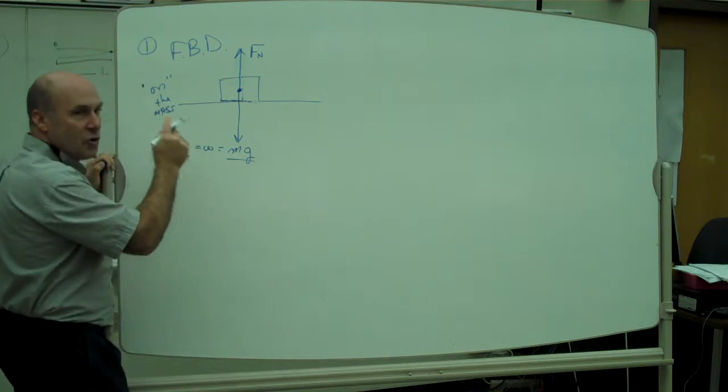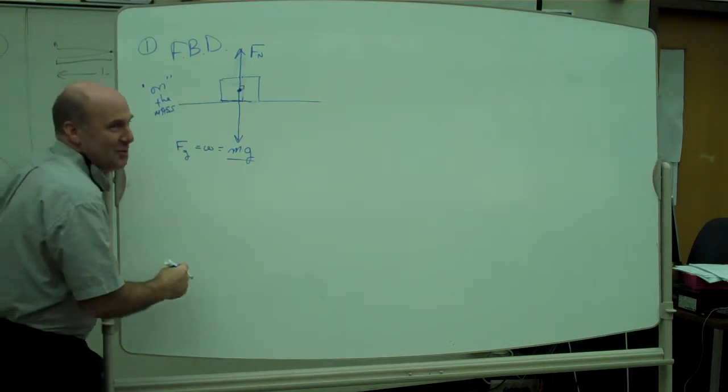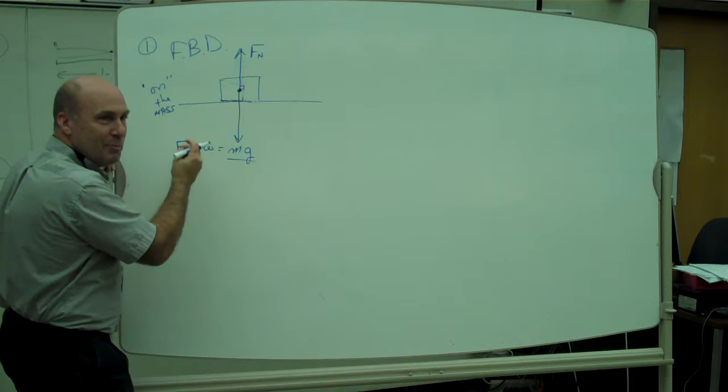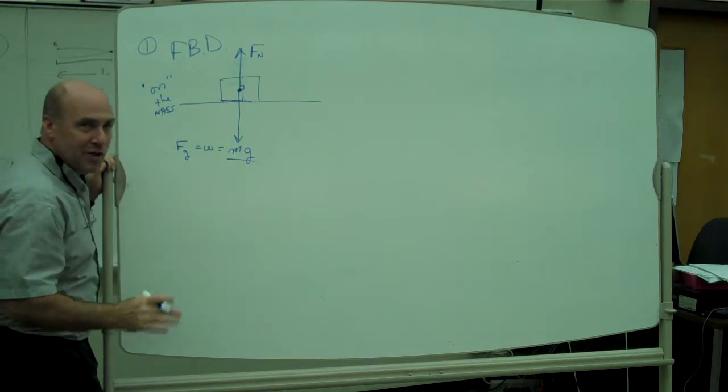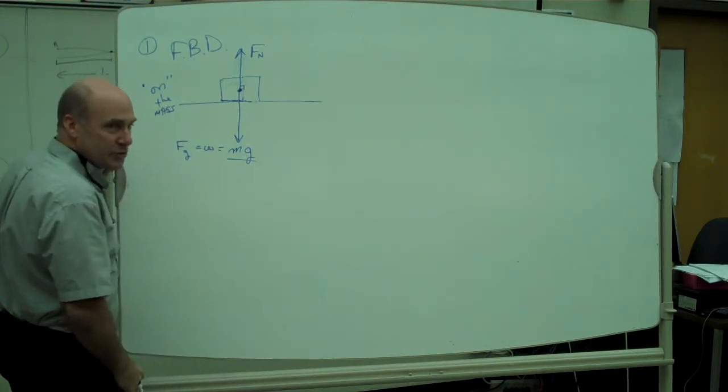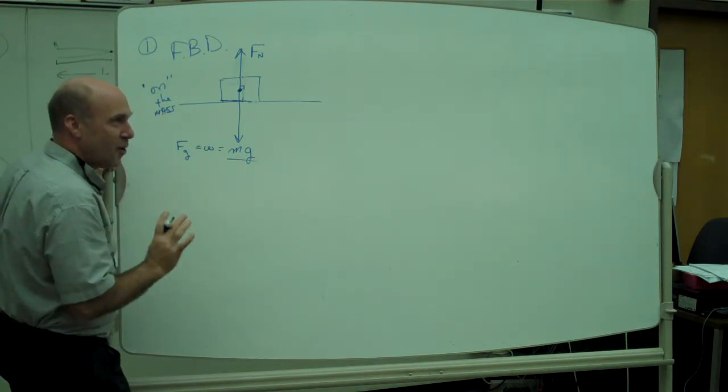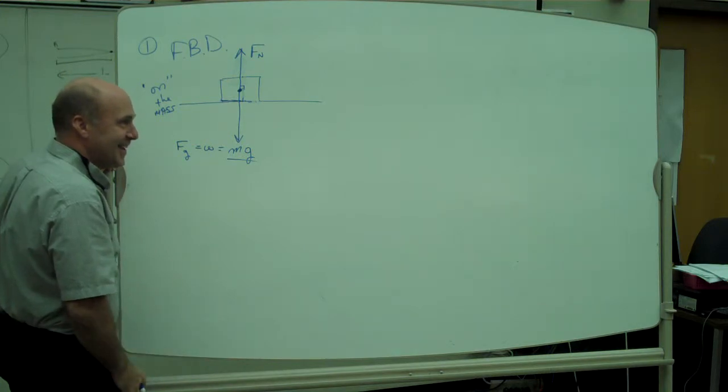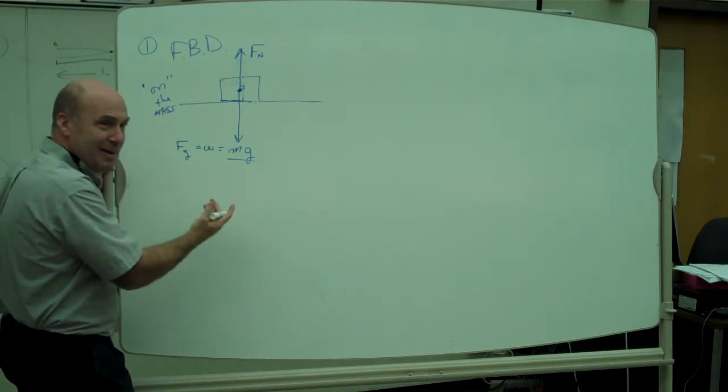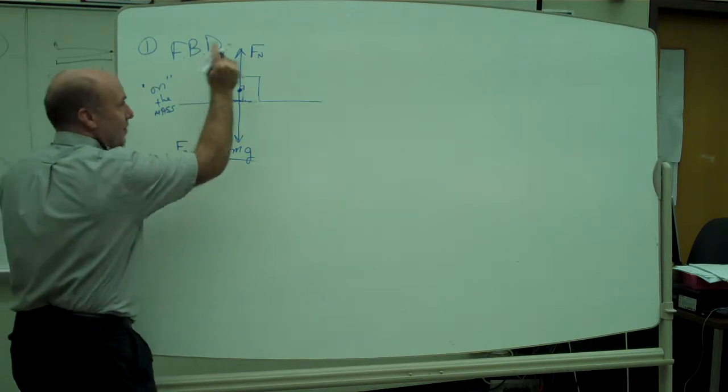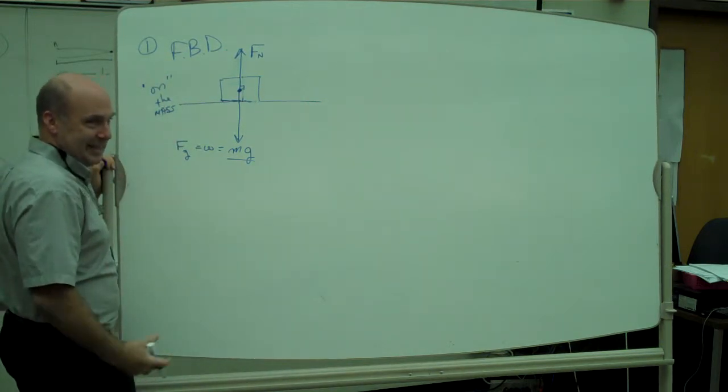Dave, if you looked in the dictionary under normal, you would find the word... Well, first you'd see a picture of Christian with a line through it. But then after that, you would see a right angle. Normal means perpendicular to. So here's how you remember. The normal force is always, always, always perpendicular to the surface. Normal force is perpendicular, and in this case, it's fighting mg.